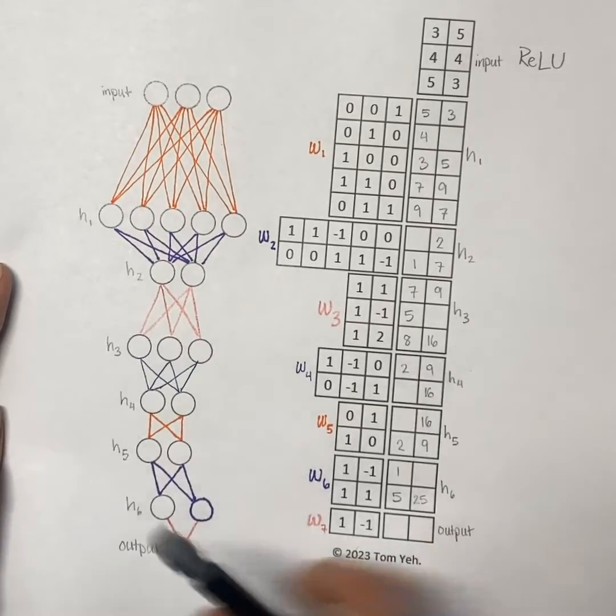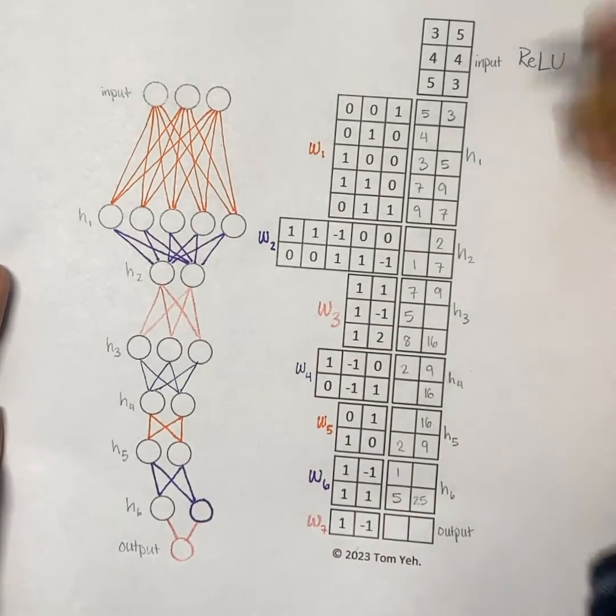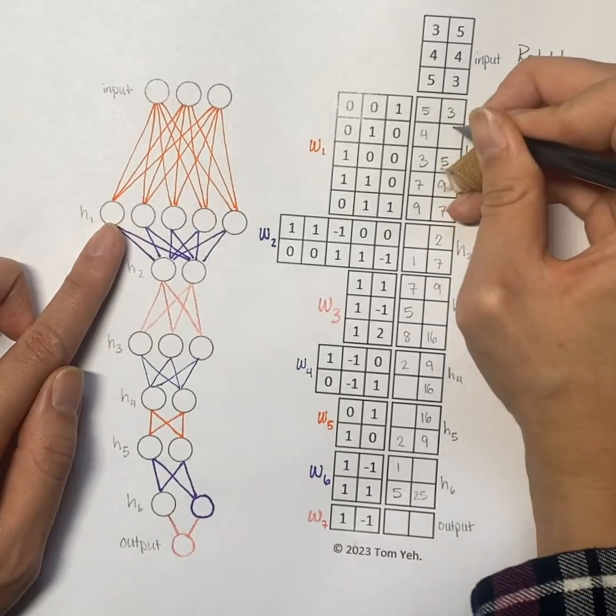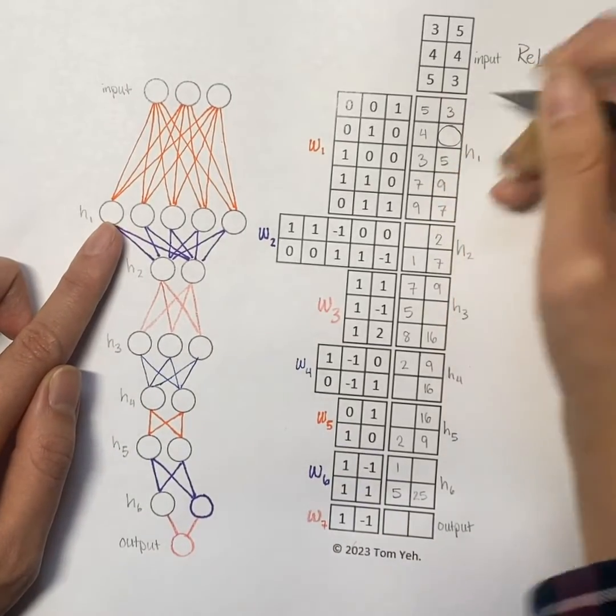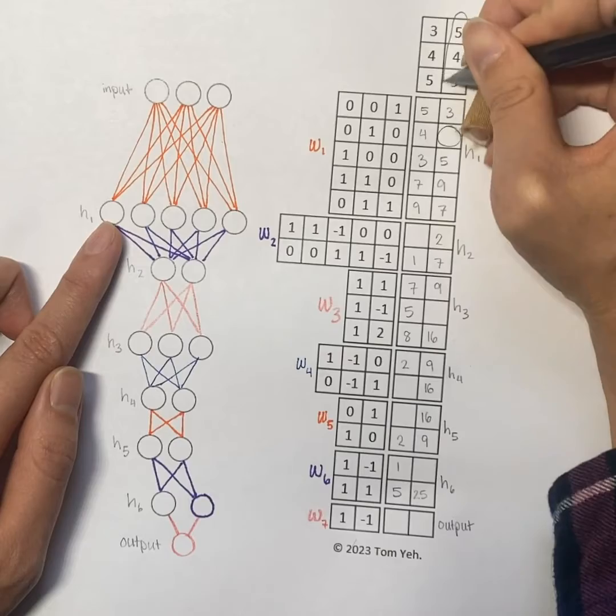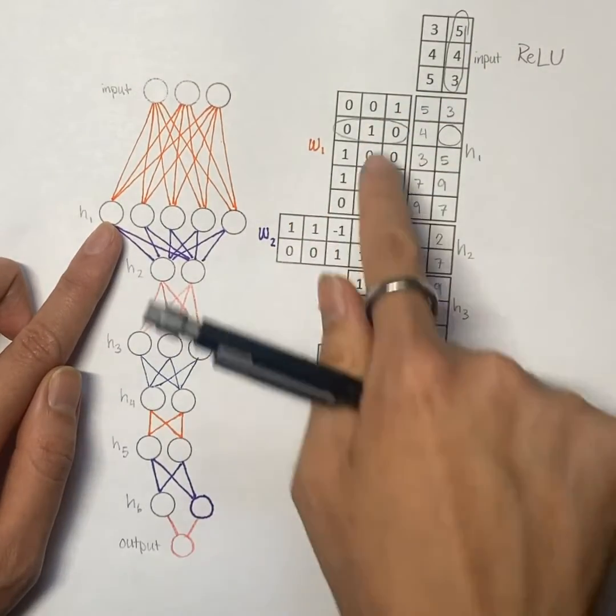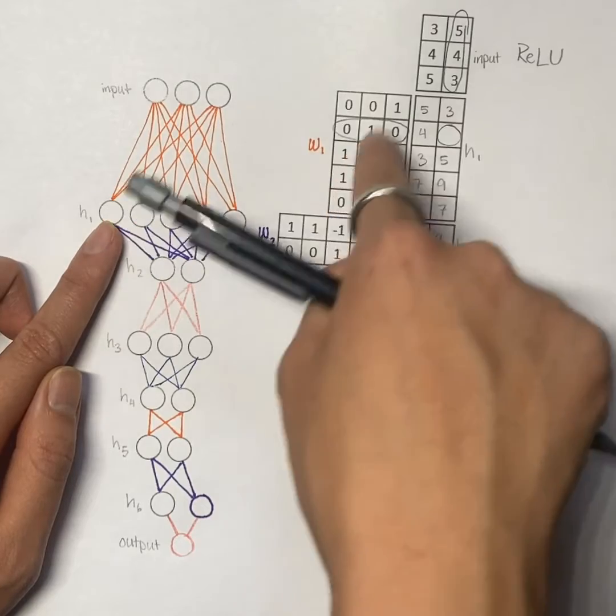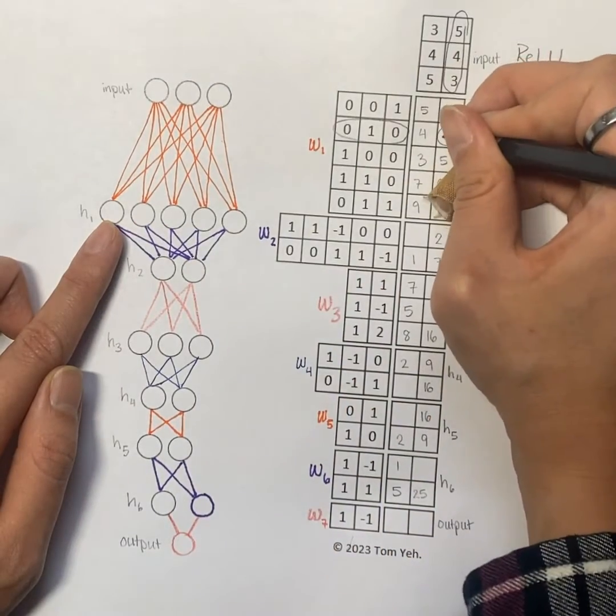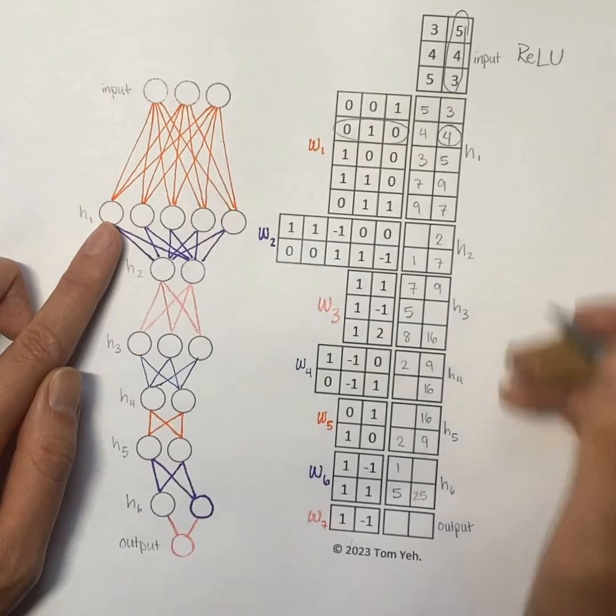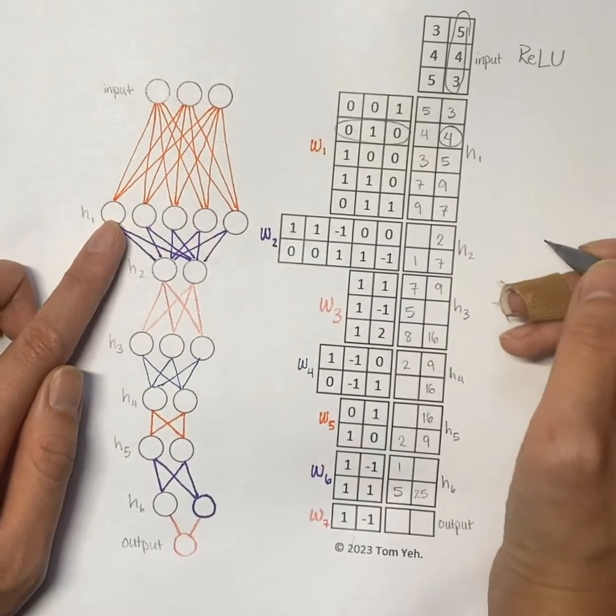So, let's get started filling in some of the blanks here. In hidden layer 1, we can see that we have a blank here, so we're going to multiply this column by this row. I can see from this weight that we're looking for the second value of the input, which is 4. All right, so our hidden layer 1 is now complete.